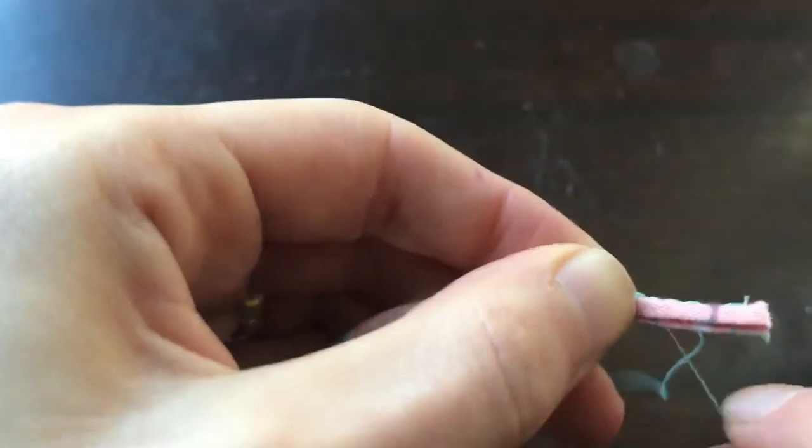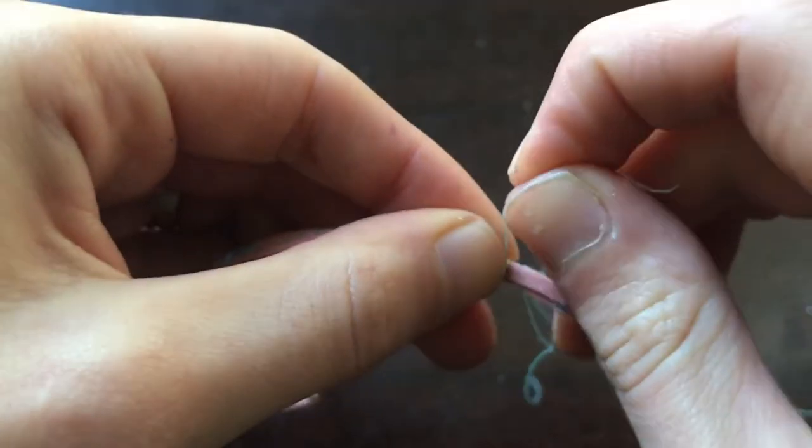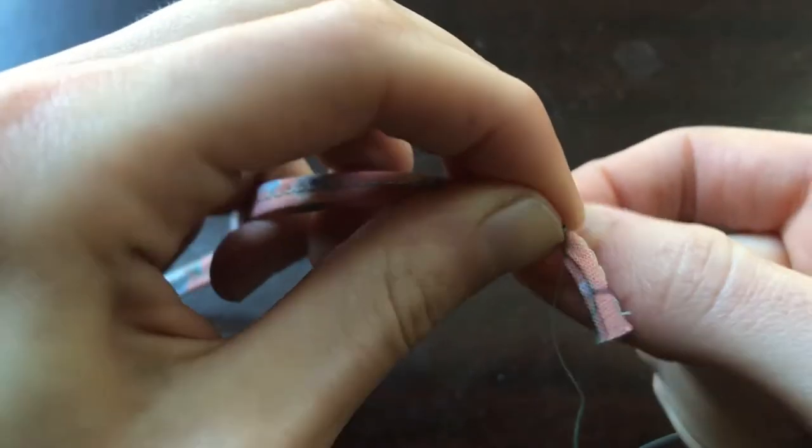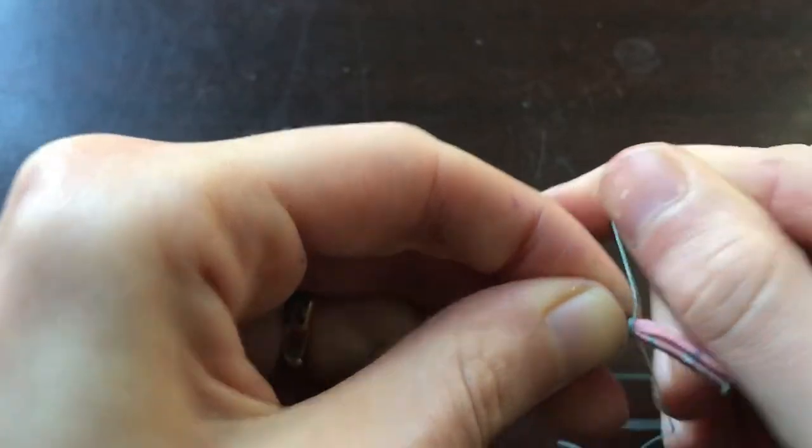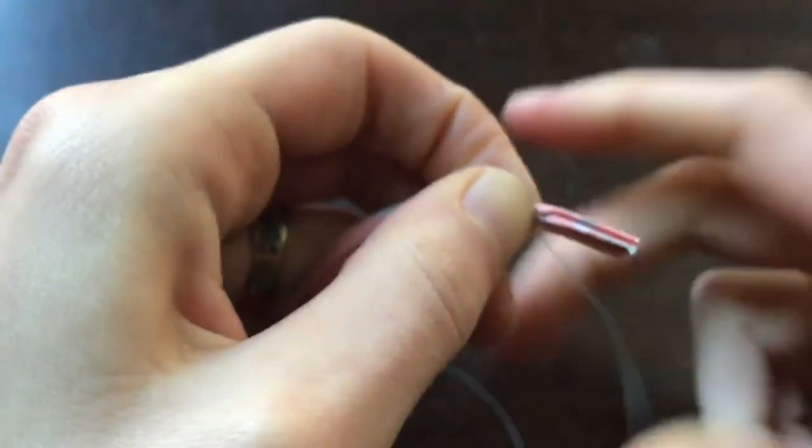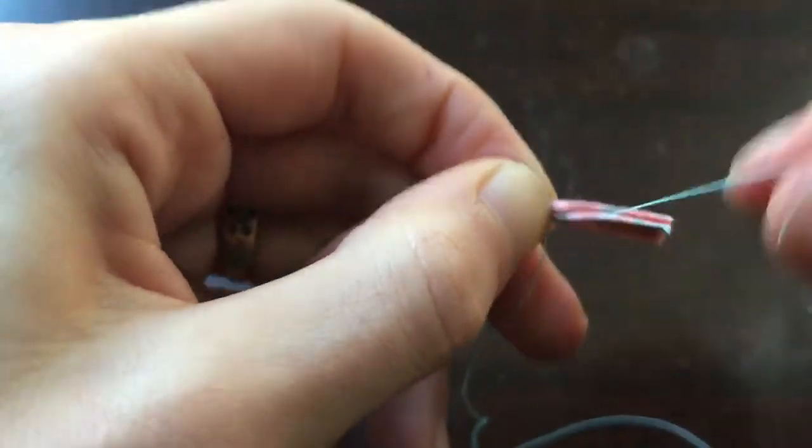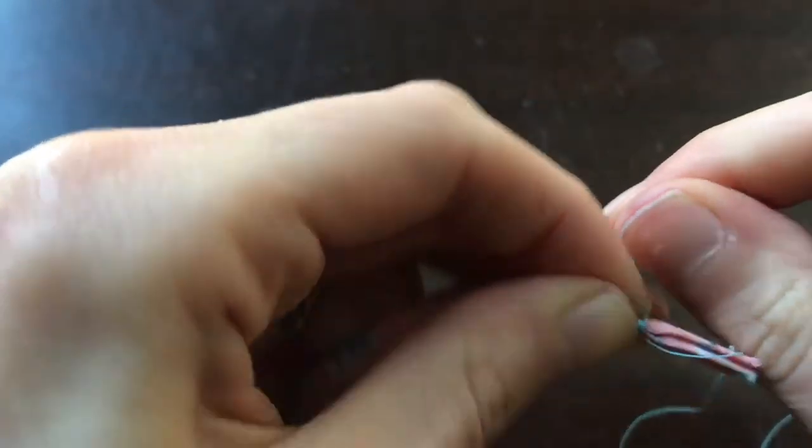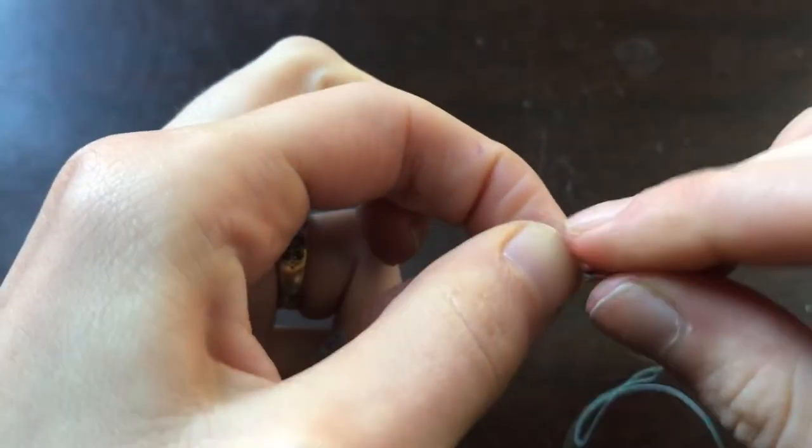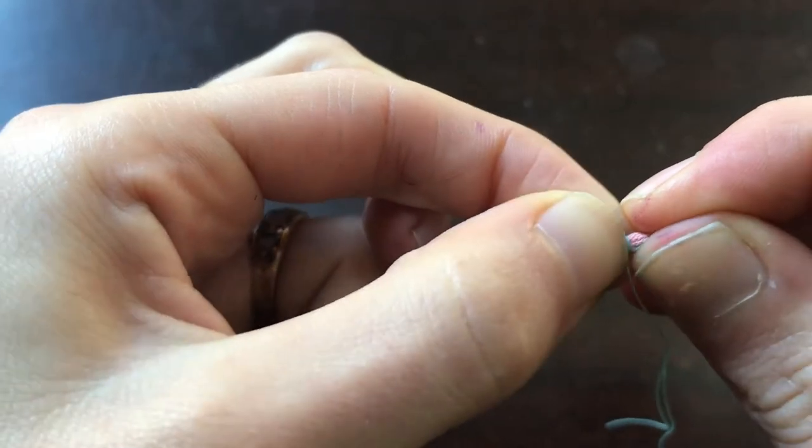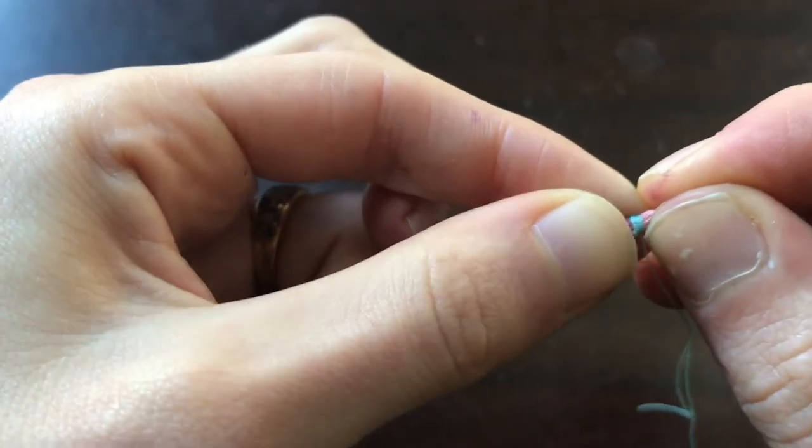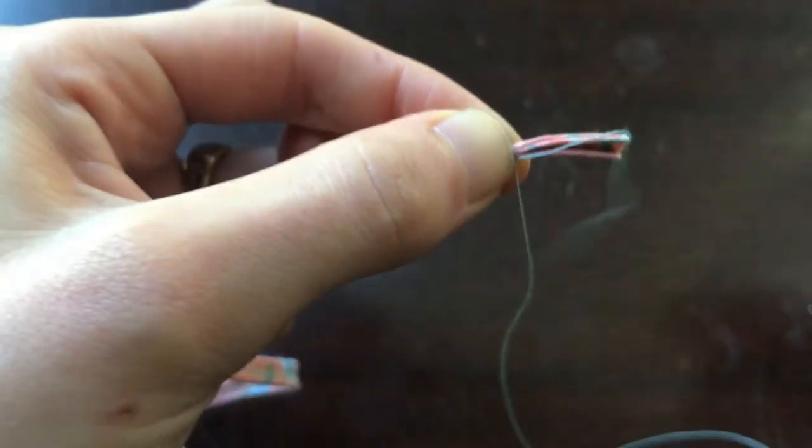So I want to wrap pretty tightly keeping even tension on it and I want to make sure that I'm completely covering the fabric. So it can take a second to get going but then it'll get easier and I tend to hold the wraps of thread with my thumb and pointer finger as I go.